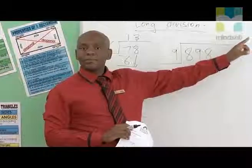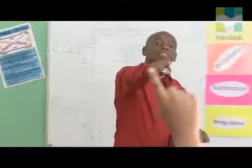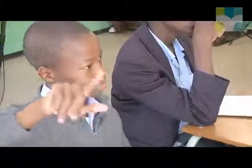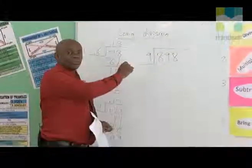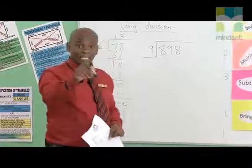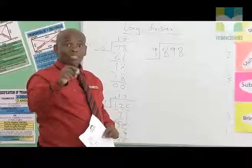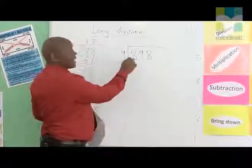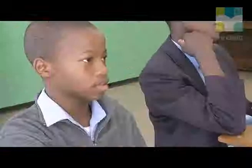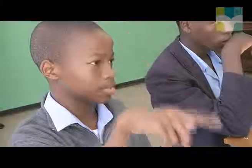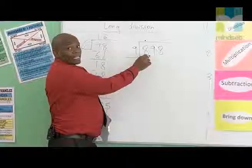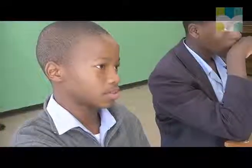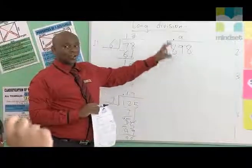What is the first step? It's divide. What numbers are you dividing? 9 into 898. Can you say 9 into 898 — will you give me an answer quickly? So what are you supposed to do? 9 into 8 can't go, so put a dot. Then 9 into 89 — how many times does it go? It goes 9 times. 9 into 89 goes 9 times. This is the first step.